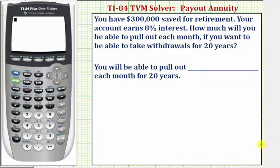Welcome to an example on how to use the TI-84 TVM solver in order to determine the monthly payment of a payout annuity. In this example, you have $300,000 saved for retirement. Your account earns 8% interest. How much will you be able to pull out each month if you want to be able to take withdrawals for 20 years?